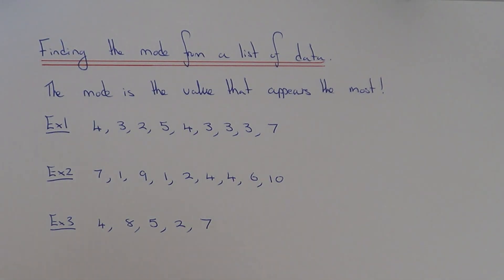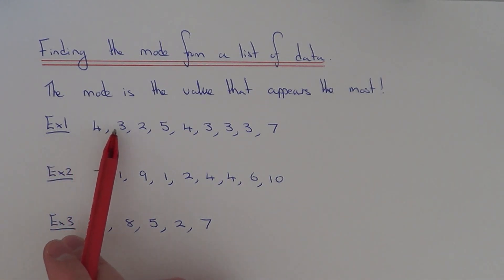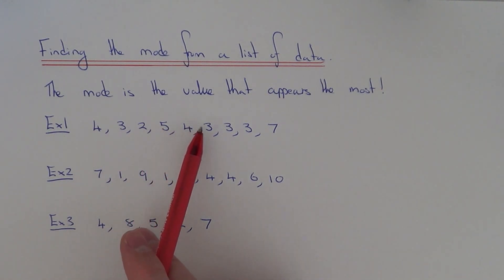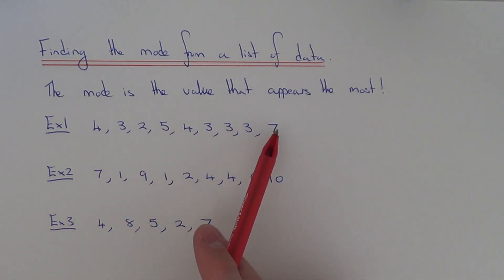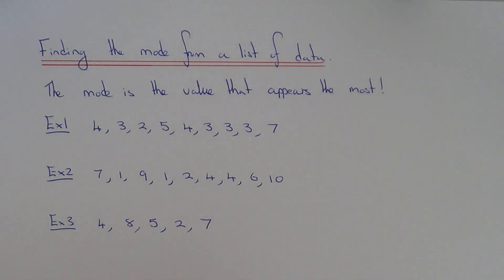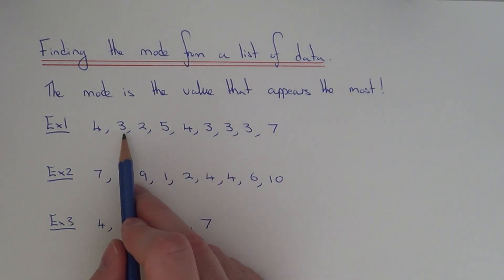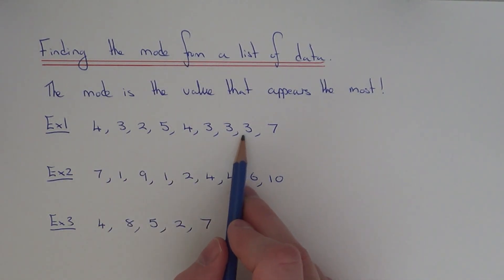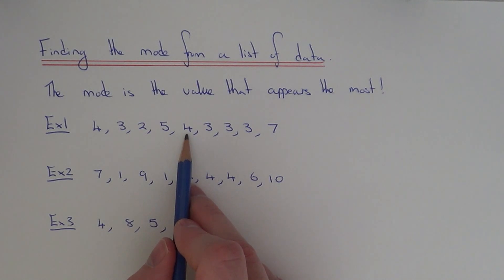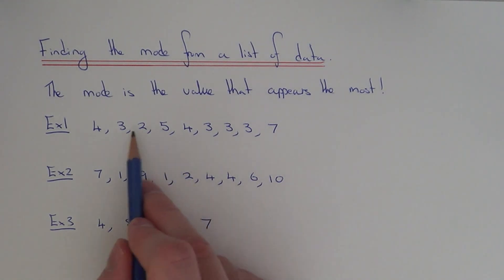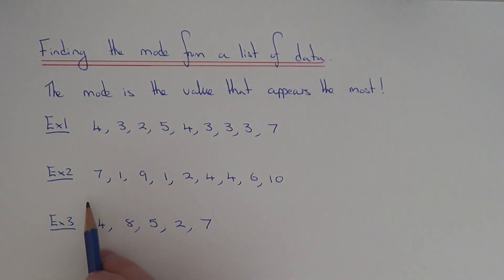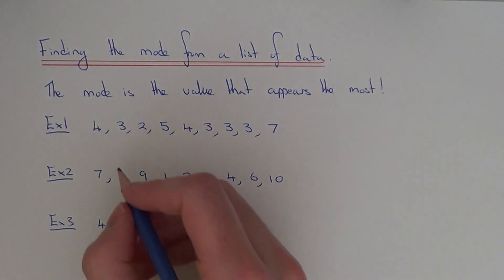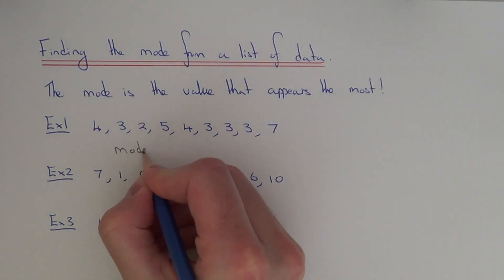So let's look at example one. We've got some data here which is 4, 3, 2, 5, 4, 3, 3, 3 and 7. We just need to find the number which appears the most. If you have a look at your list, we've got 4 threes, we've got 2 fours, we've got 1 five, 1 two and 1 seven. So it should be clear then that 3 is the mode, as this number comes up the most.